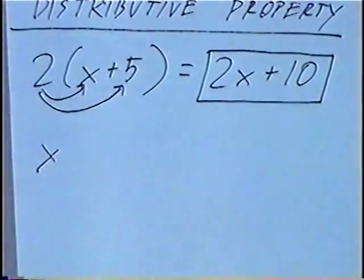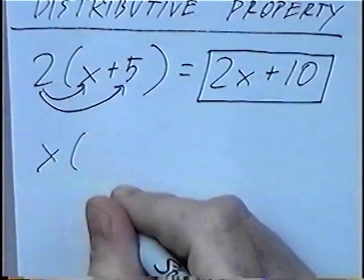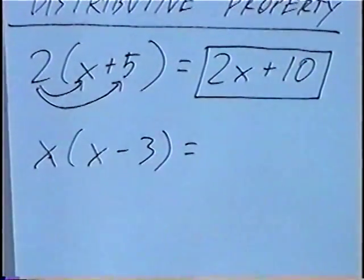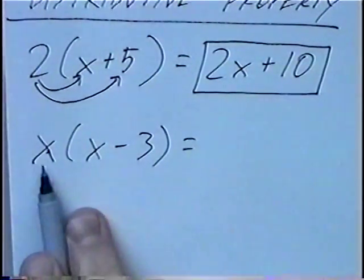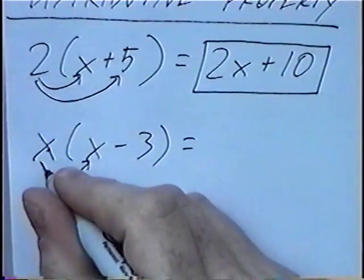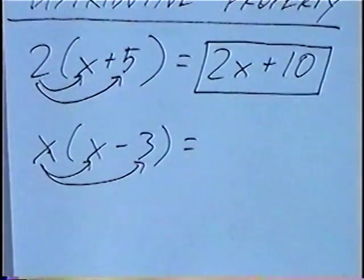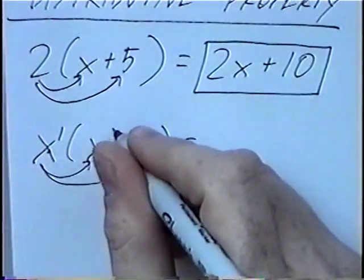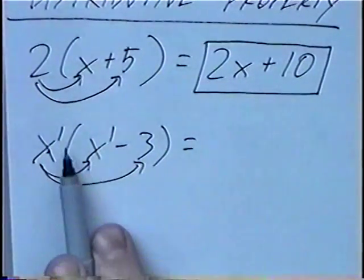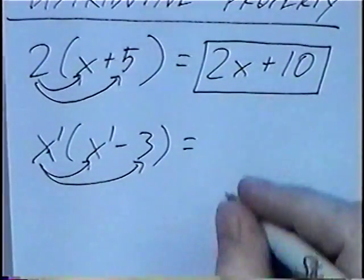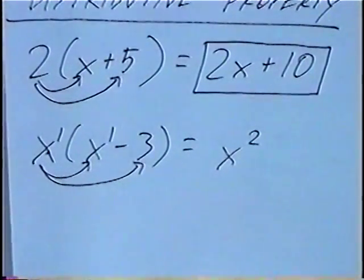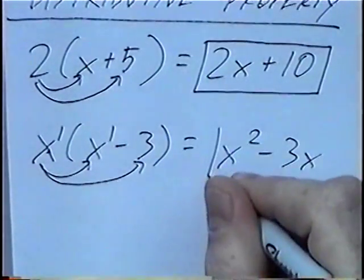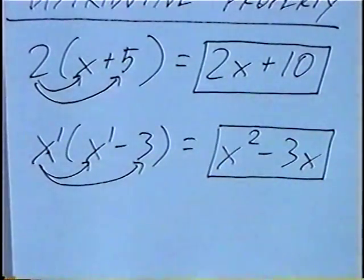Second question: x and inside parenthesis x minus 3. Multiplying the term outside by each number and each term inside the parenthesis. x times x — if you remember from previous sections, we can put exponents on these, and when you multiply we'll be adding the exponents. So x times x would be x squared, and x times a negative 3 would be minus 3x. Our final answer is x squared minus 3x.